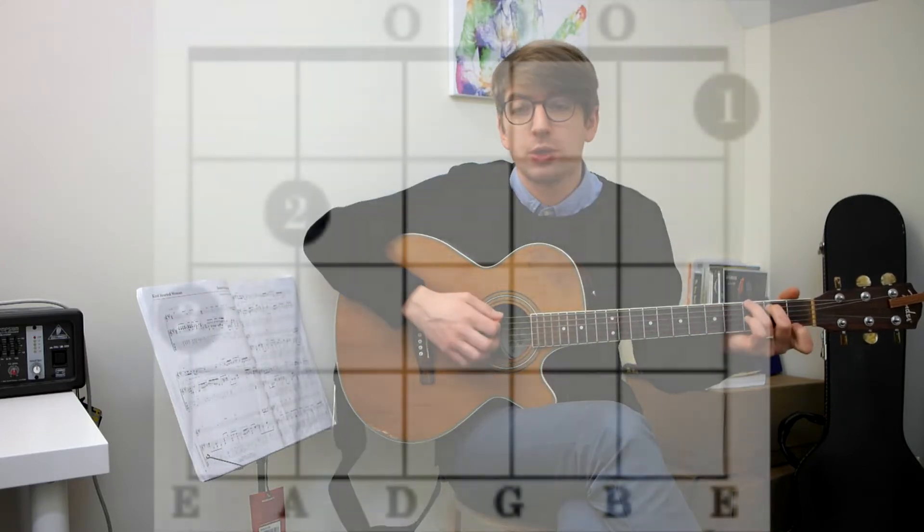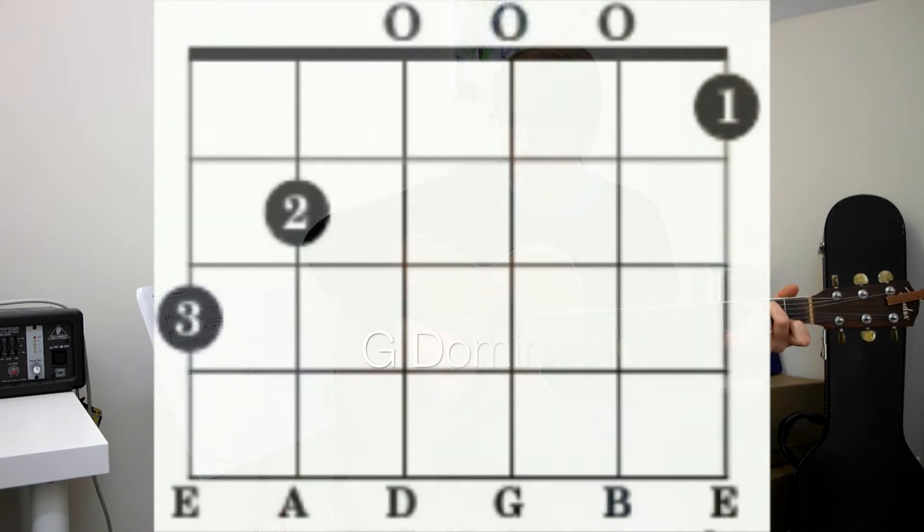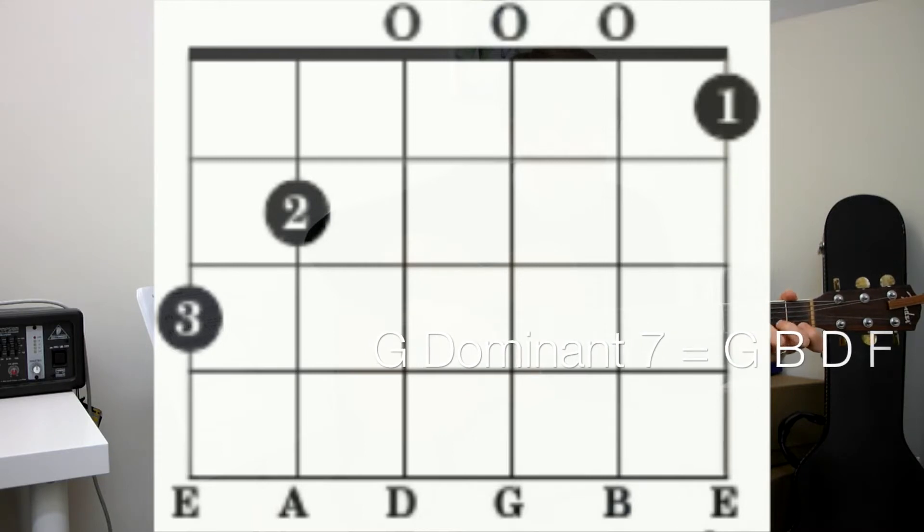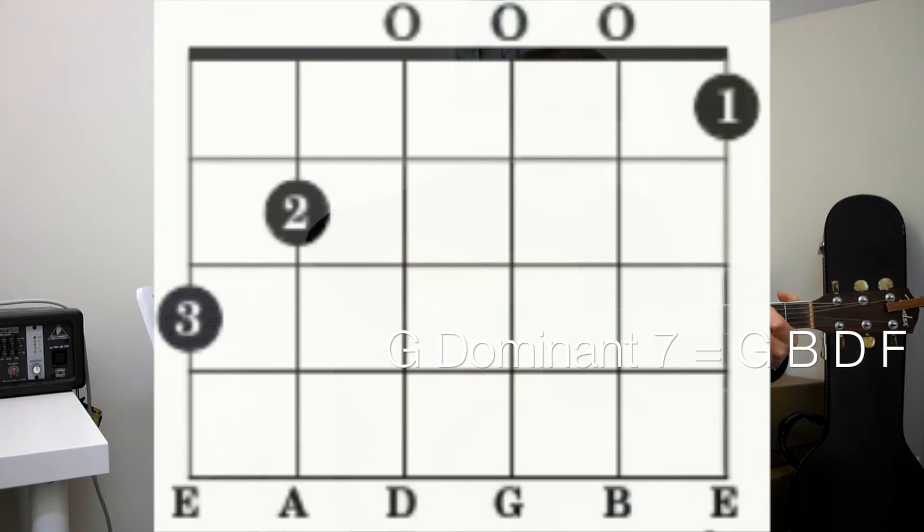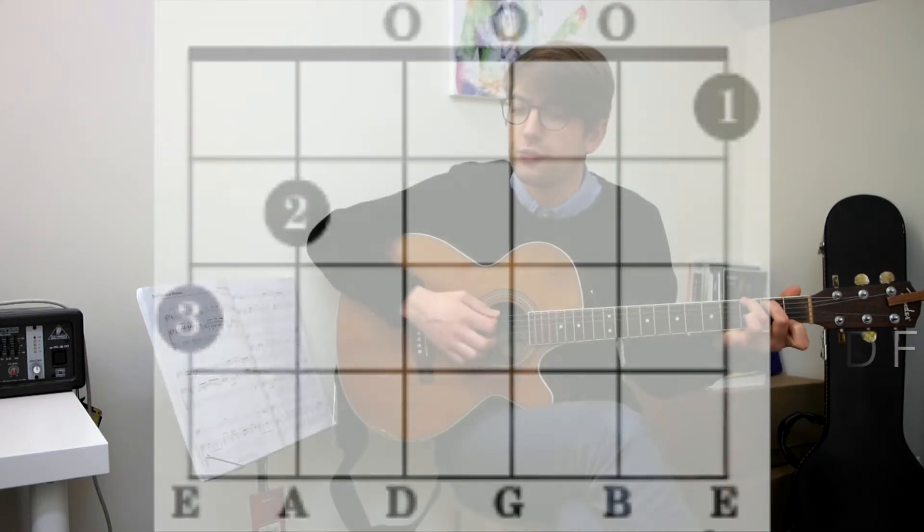Then the G dominant 7th, so that's adding the F in. And the A minor 7, so we've got the G, the B, the D. And then as we said before, you can either do the open B, the D, or the G again. But that's all G, B, and D. But if you just change that note to an F, the first fret of the first string, it gives you that 7th feel.